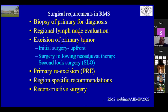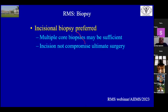Incisional biopsy is preferred for most sites, but today with good coaxial core needle biopsy needles available, multiple core biopsies may be sufficient. If doing an incisional biopsy, the incision should not compromise ultimate surgery. In the limbs, it should always be a longitudinal vertical incision — a transverse incision increases the amount of skin and soft tissue that needs to be excised and may prevent primary closure.